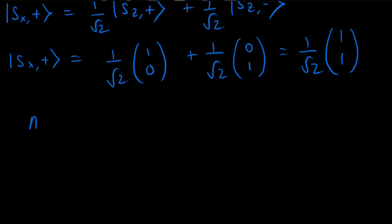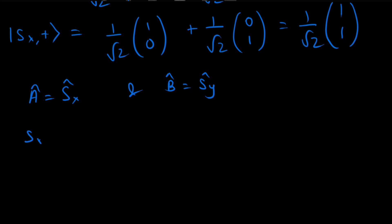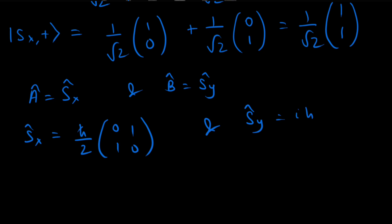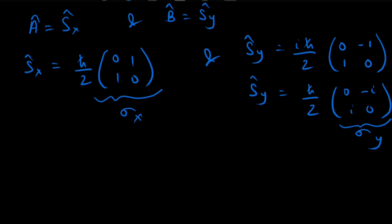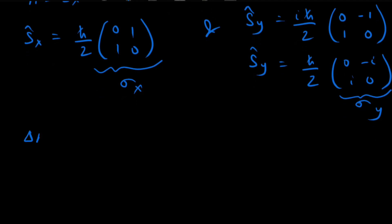Taking A = Sx and B = Sy, the Sx operator is written as (ℏ/2) × [[0,1],[1,0]], and the Sy operator is written as (ℏ/2) × [[0,−i],[i,0]]. These are just the Pauli matrices in the x and y directions. We also use the formula ΔA² = ⟨A²⟩ − ⟨A⟩².